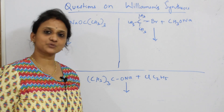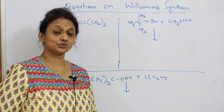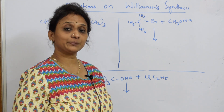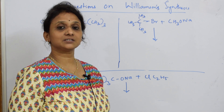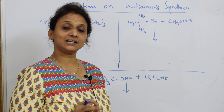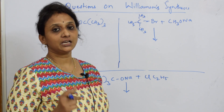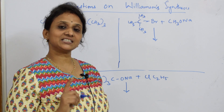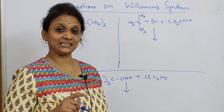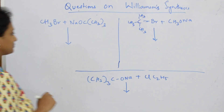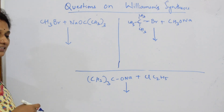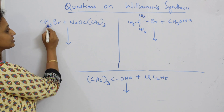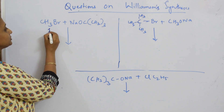We've already discussed Williamson ether synthesis. The key rule to remember: if you have to prepare an ether in Williamson synthesis, a primary alkyl halide is more preferred than tertiary. If you're finding a secondary or tertiary alkyl halide, try to prepare alkenes. Now, let's see this example — this alkyl halide has a carbon with three hydrogens, so this is a primary alkyl halide.